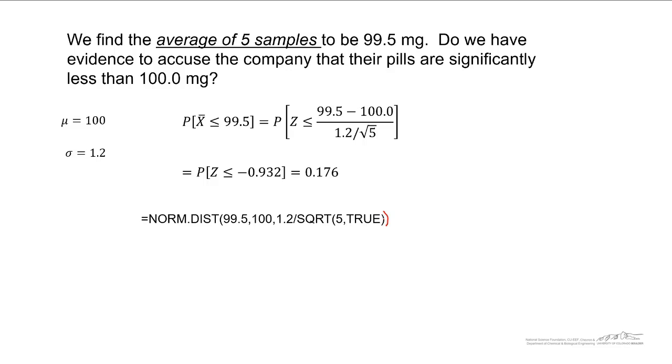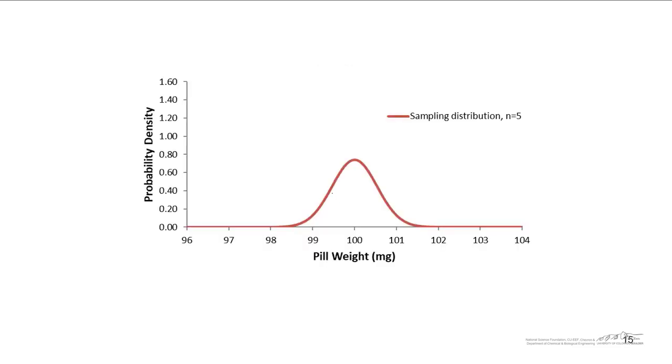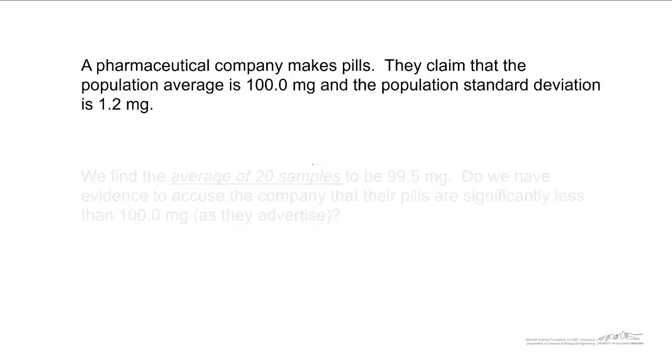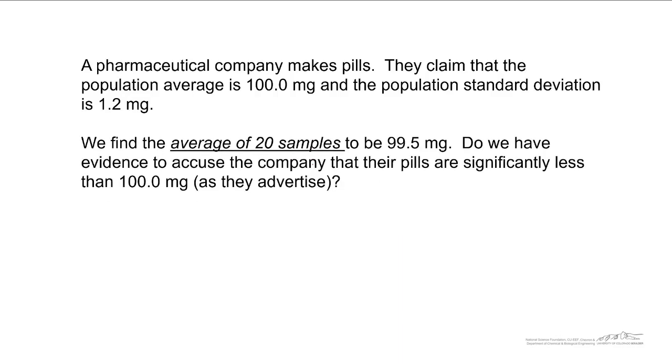So here, we really couldn't conclude that we are being cheated by the company. In other words, 99.5, if we looked at the sampling distribution, so this is looking at x bar, the probability density of x bar, when n equals five, that occurs about 18% of the time. Now, let's look at the far extreme here.